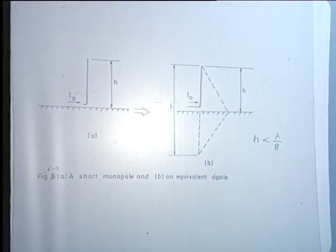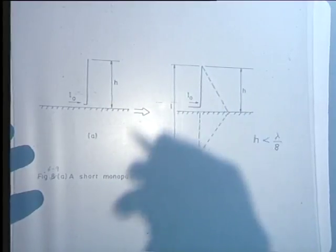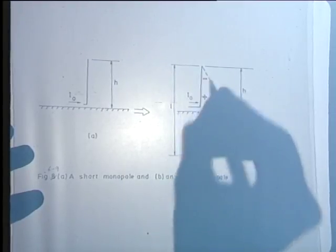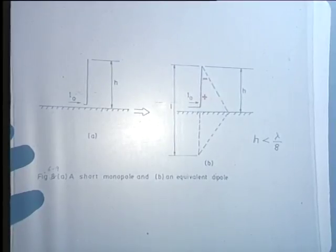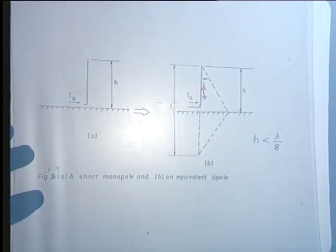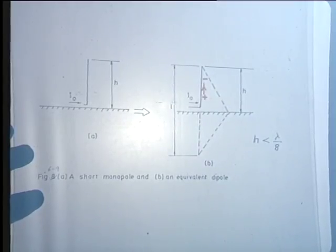To show that, we consider the current flowing on the actual monopole antenna. At some instant of time, the charges here are positive and negative at two points on the physically existing monopole antenna, and the current flows from the positive charge to the negative charge.